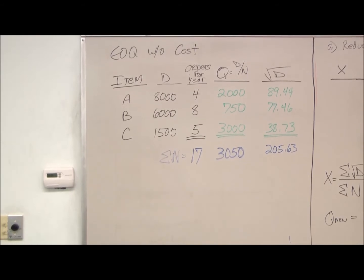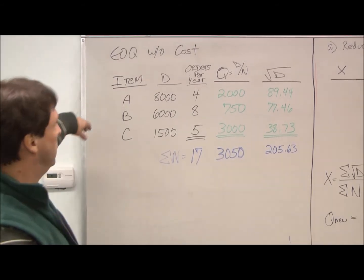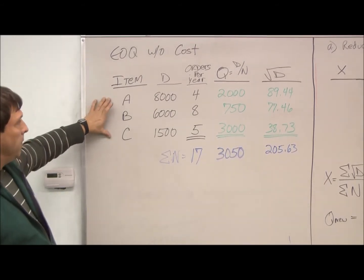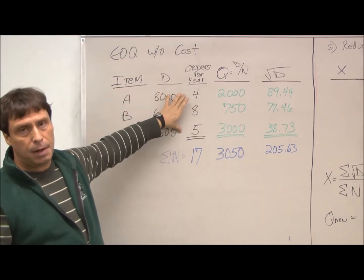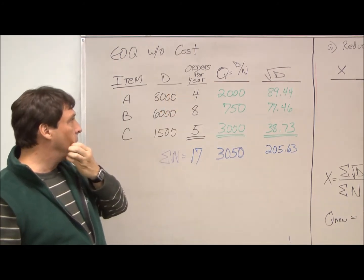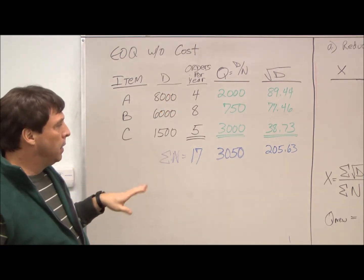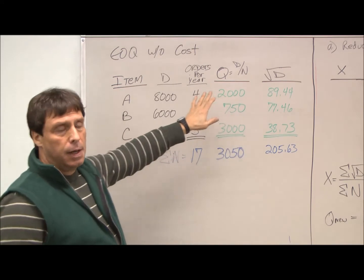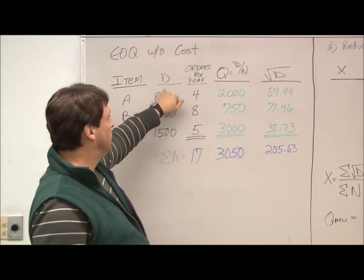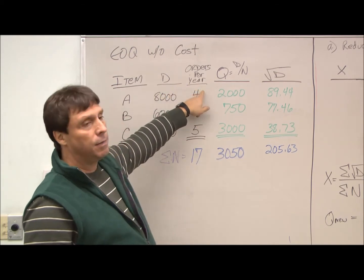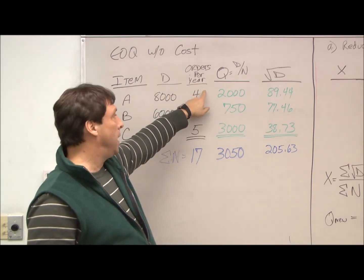Alright, so we were given a lot of information in this problem. We have the ABC items, this is their yearly demand, this is estimated how many orders we put through per year. From that we can estimate our order quantity, which is simply our annual demand divided by how many orders we had in a year.